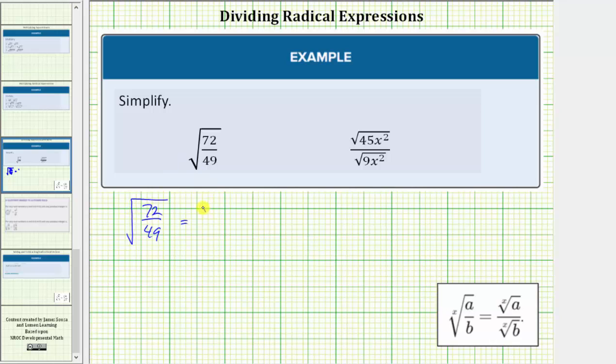So this is equal to the square root of 72 divided by the square root of 49. Let's simplify the square root of 72 by looking at the prime factorization.